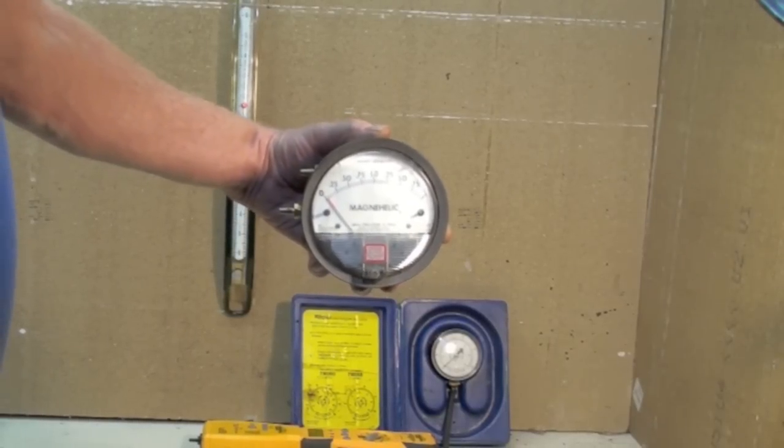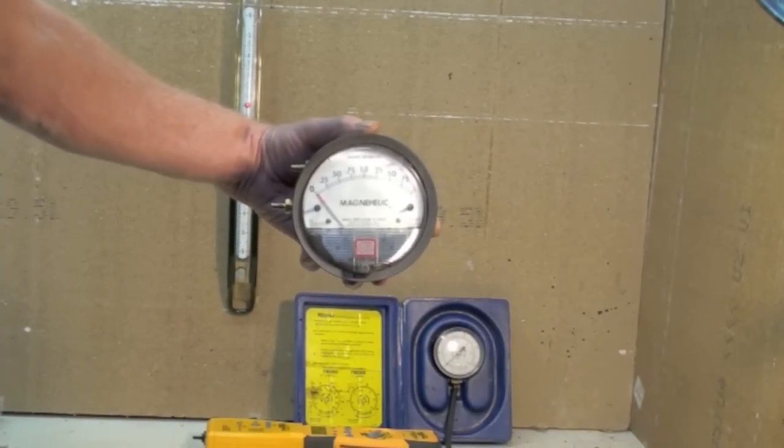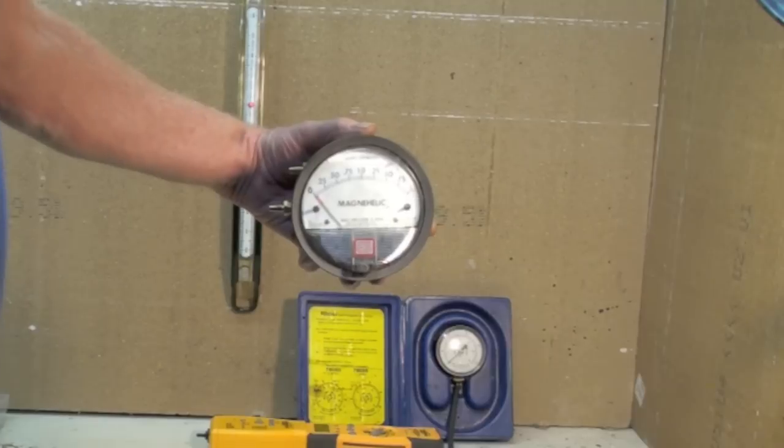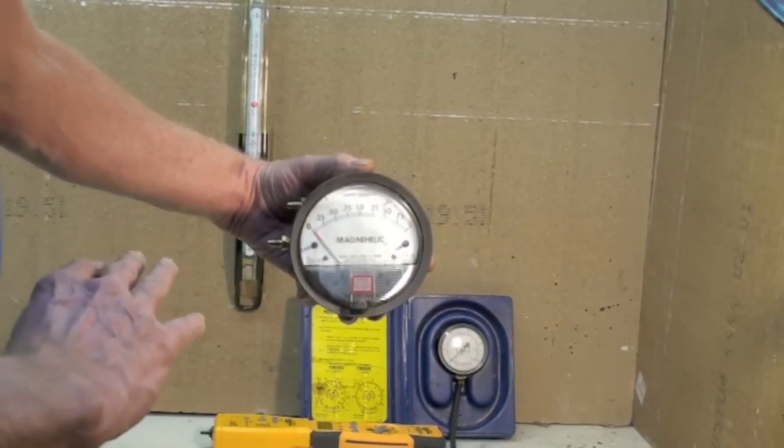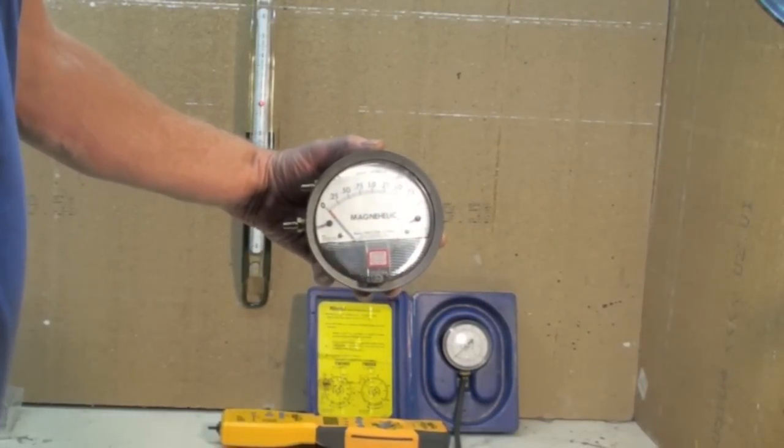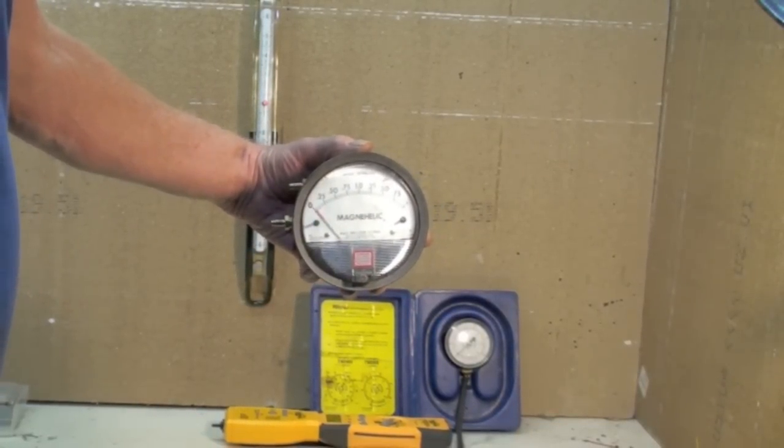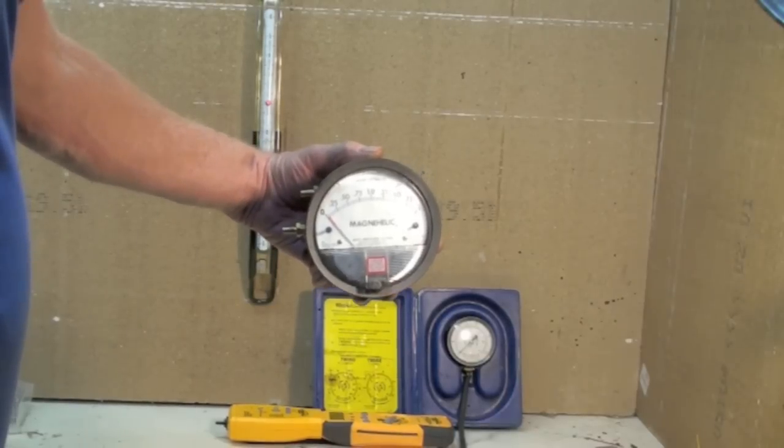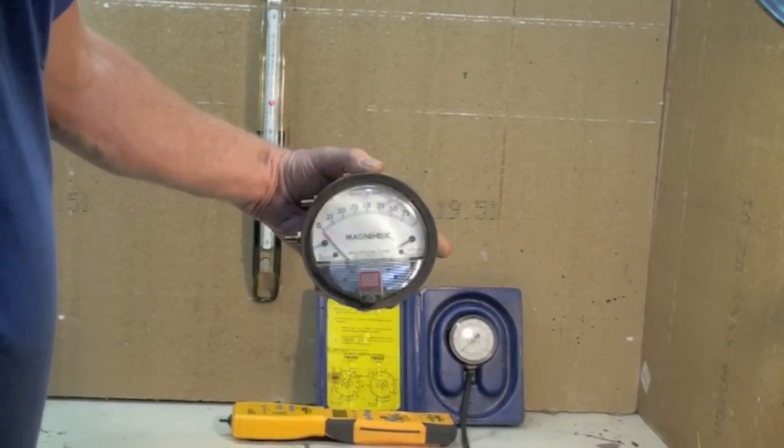These do have to be calibrated each time you use them. They're kind of delicate and they're only good for whatever scale they have. We can get these from very small amounts of water column to very large amounts, but you have to buy a different gauge for each one.